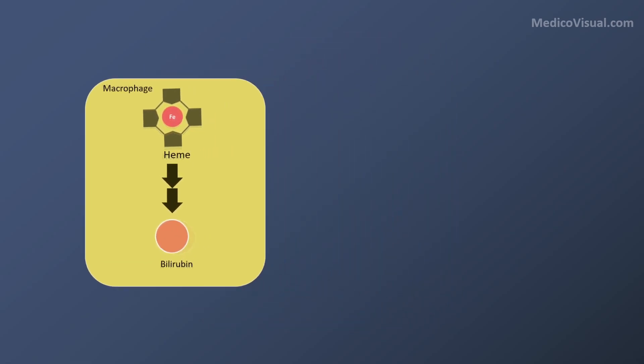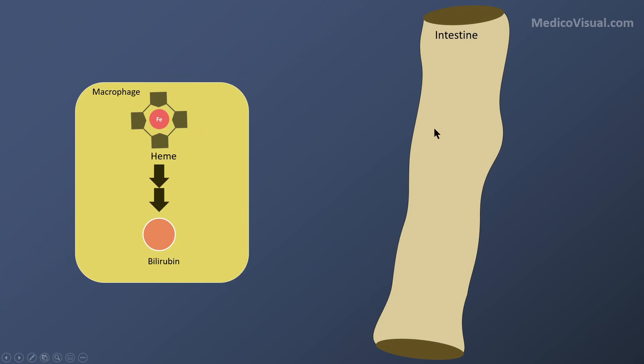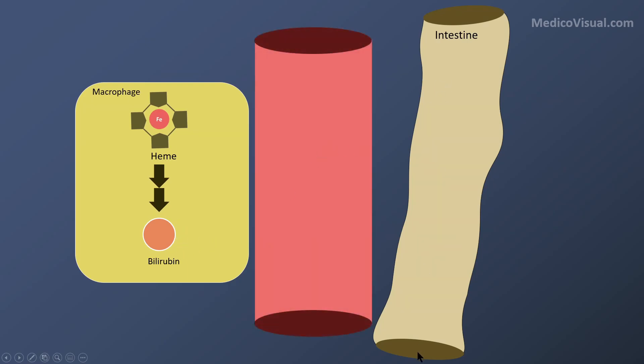This bilirubin should be excreted out of the body through feces. It is sent to the intestine through blood and then lost into feces. When bilirubin enters the blood, there is a problem. Bilirubin is a non-polar, hydrophobic, lipophilic substance. Blood is 90% water — an aqueous medium. So when this oily substance, bilirubin, is added to this aqueous medium, it coalesces and aggregates together, sticking to the walls of blood vessels.